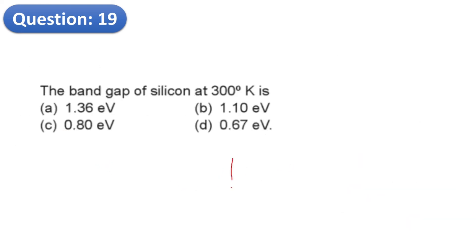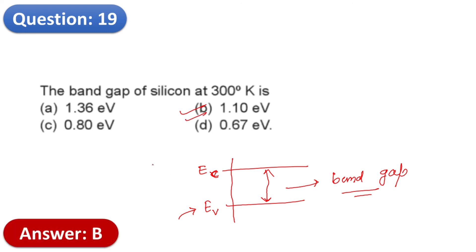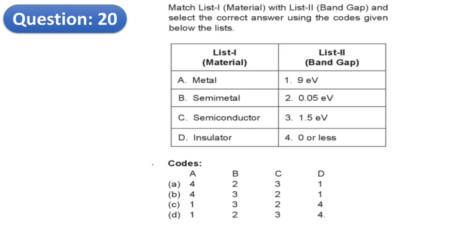Question 19: What is the band gap? The band gap is the gap between Ec (minimum energy of conduction band) and Ev (maximum energy of valence band). For silicon, the band gap equals 1.10 electron volts. Option B is the right answer.